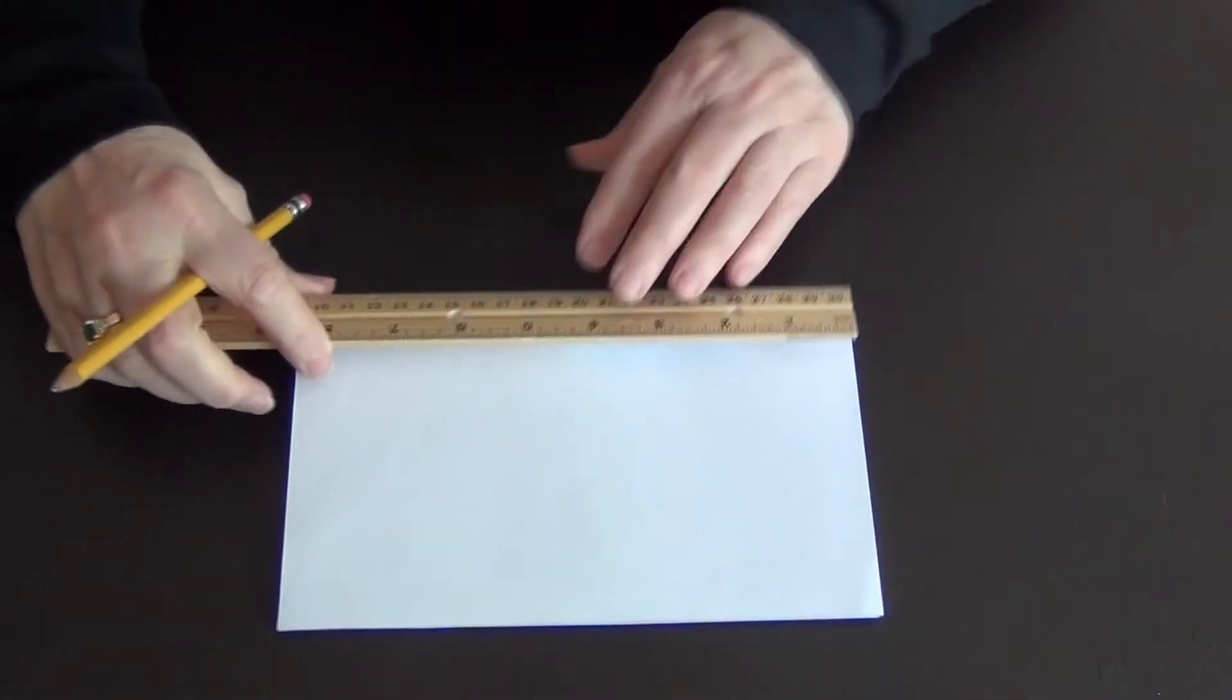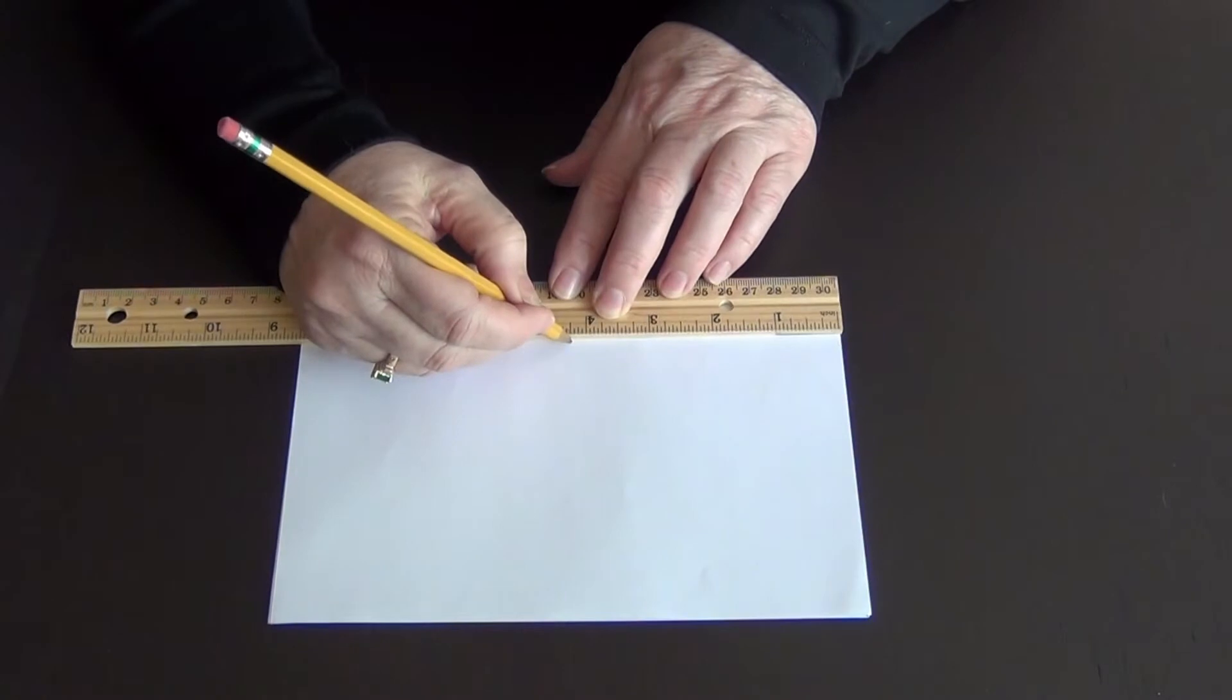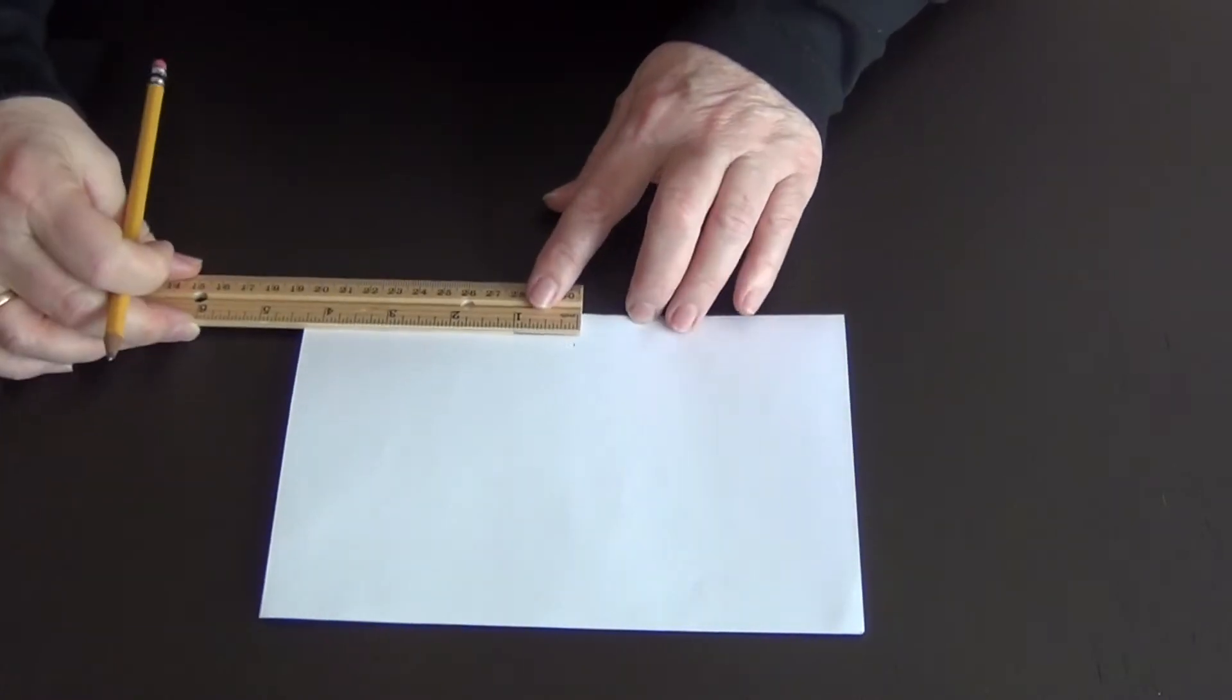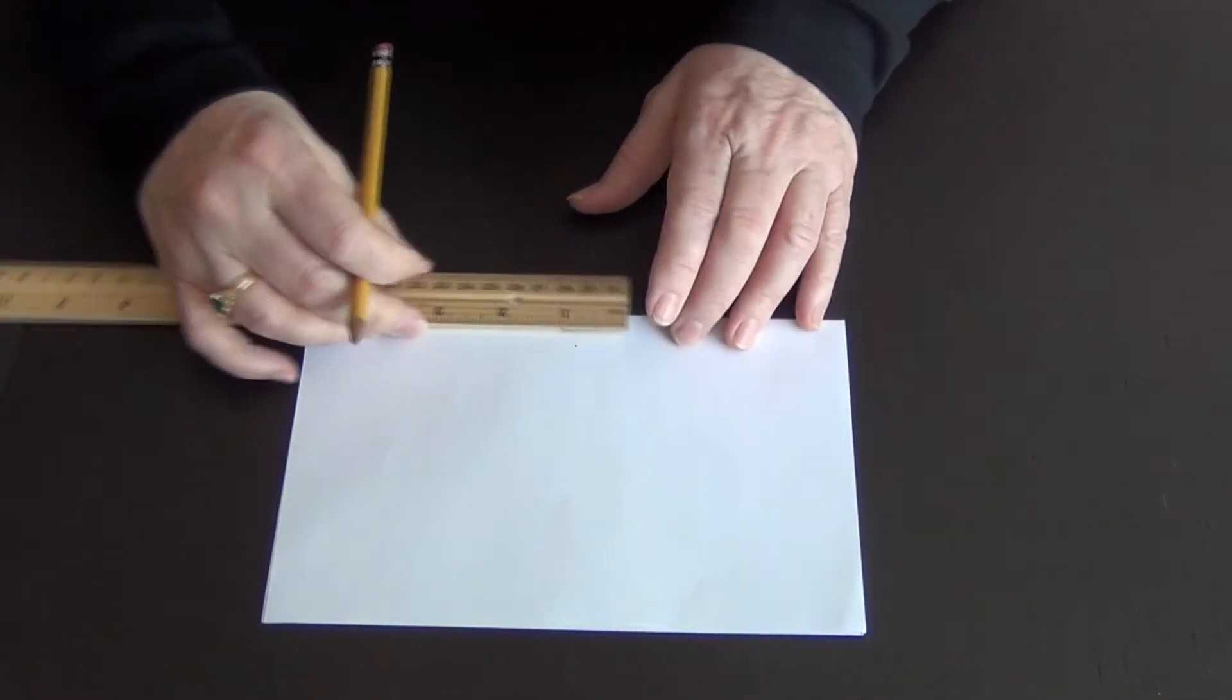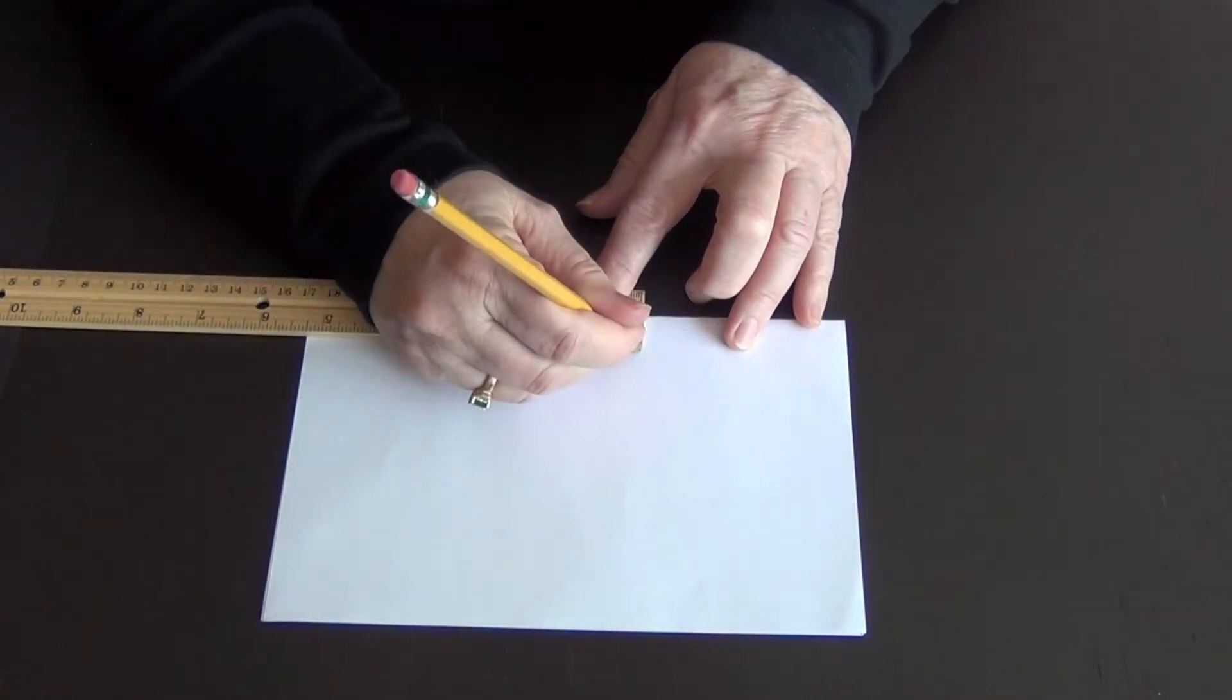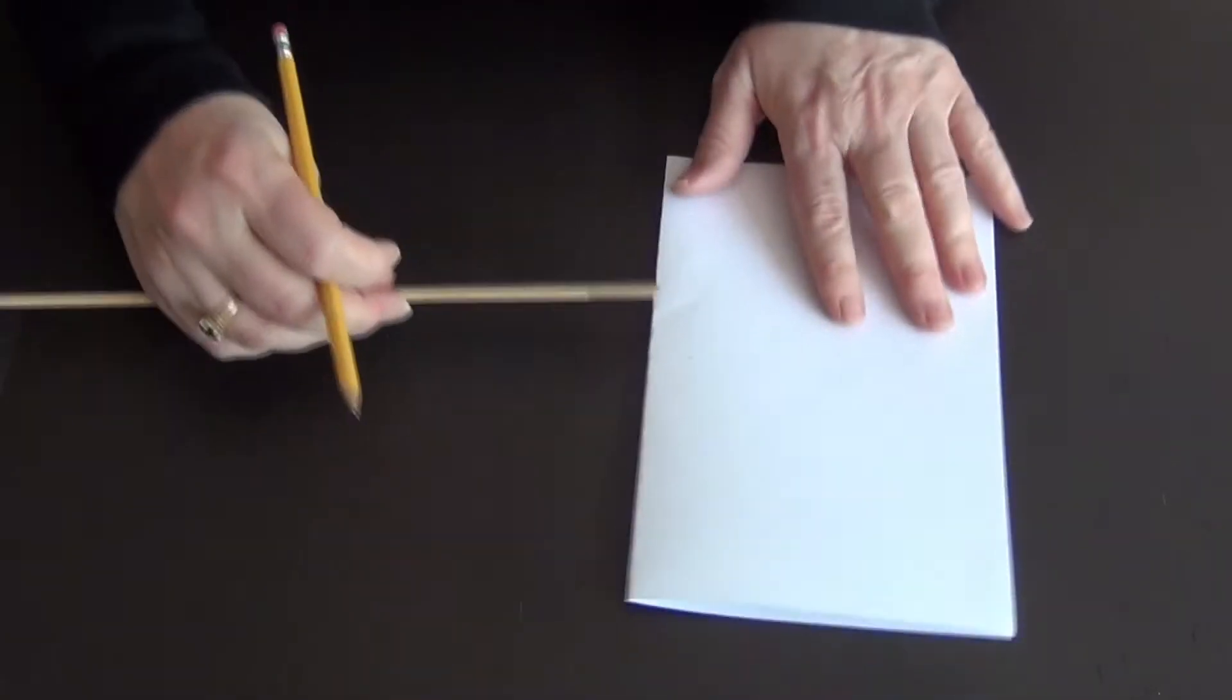Use a ruler here. This is eight and a half inches wide so the center is four inches and a quarter right there. Make a little dot and then I'm going to make another little dot one inch to that side and one inch to the side of the middle on that side so you have a two inch space there.